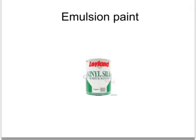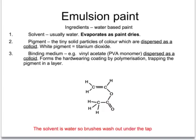The first kind of paint we are going to look at is emulsion paint — the kind used to paint the walls of a bedroom or the ceiling. It has three main ingredients. The first ingredient is the solvent, and for emulsion paint this is usually water, which evaporates as the paint dries and also thins the paint so it can be spread over the wall. The second is a pigment — tiny particles of solid colour dispersed throughout the liquid as a colloid. Finally, there is a binding medium, another substance dispersed as a colloid — in most emulsion paints this is vinyl acetate or PVA monomer. As the paint dries it forms a polymer, a hard-wearing coating that sticks the pigment in a layer to the wall and stops it washing off.